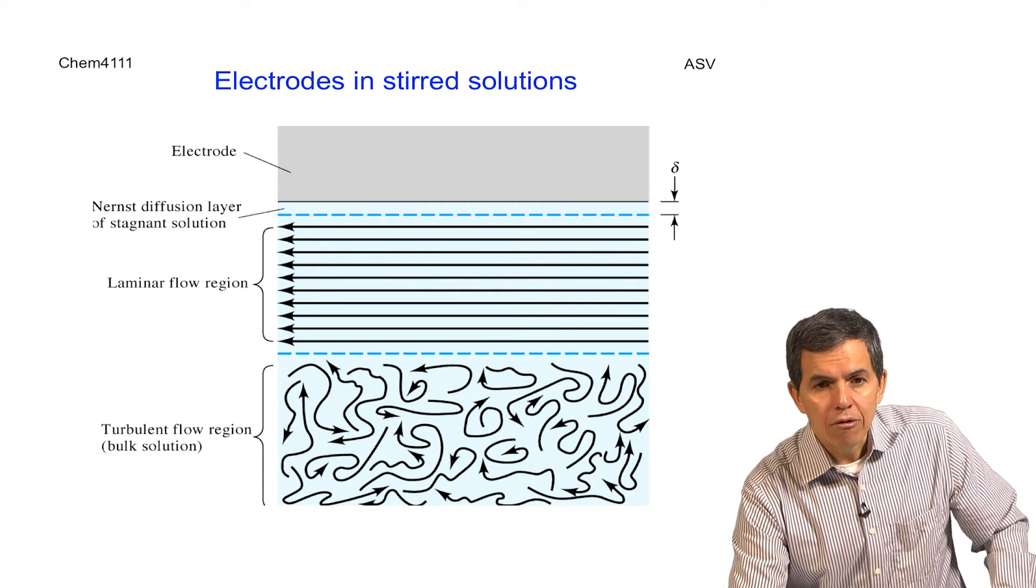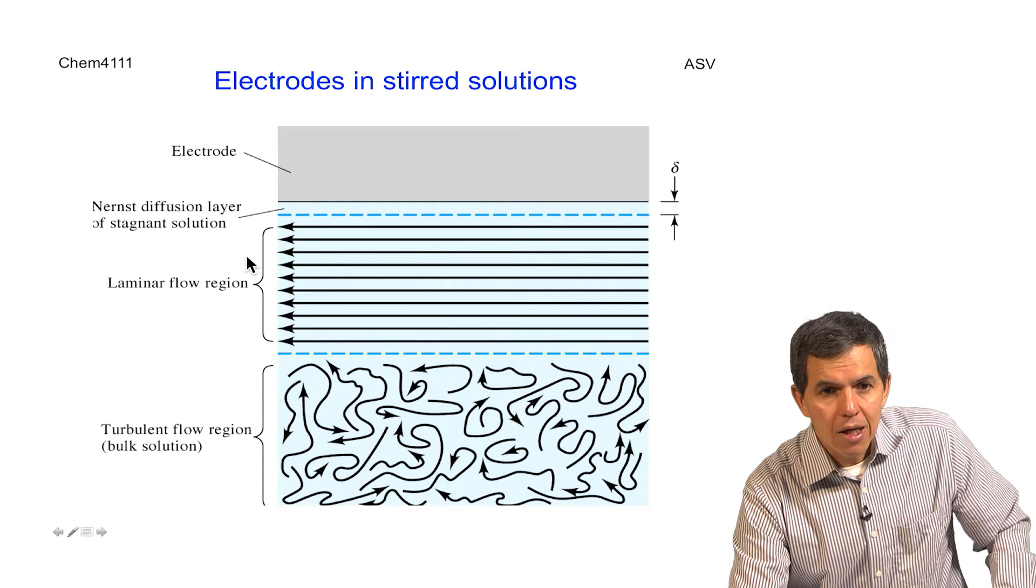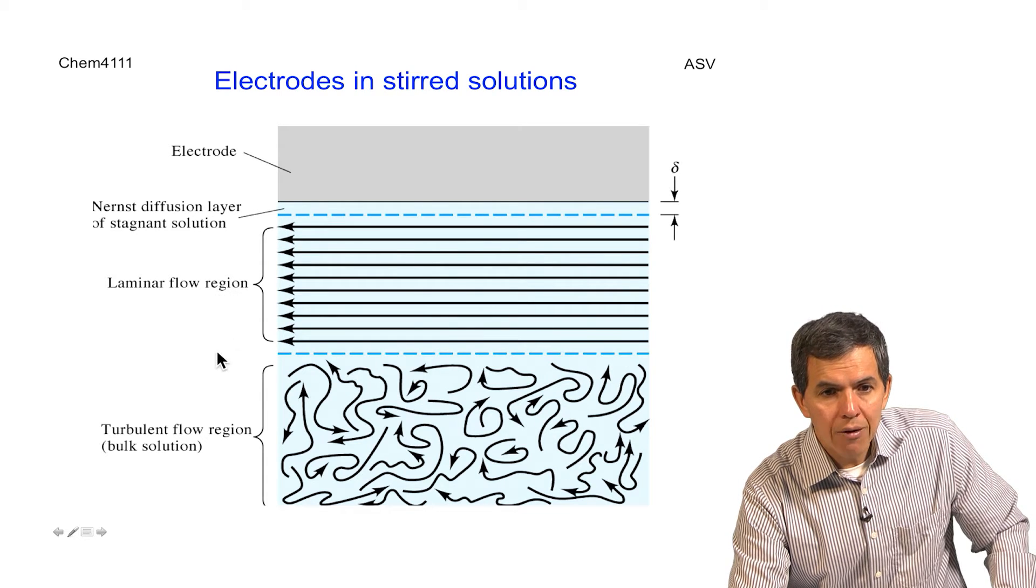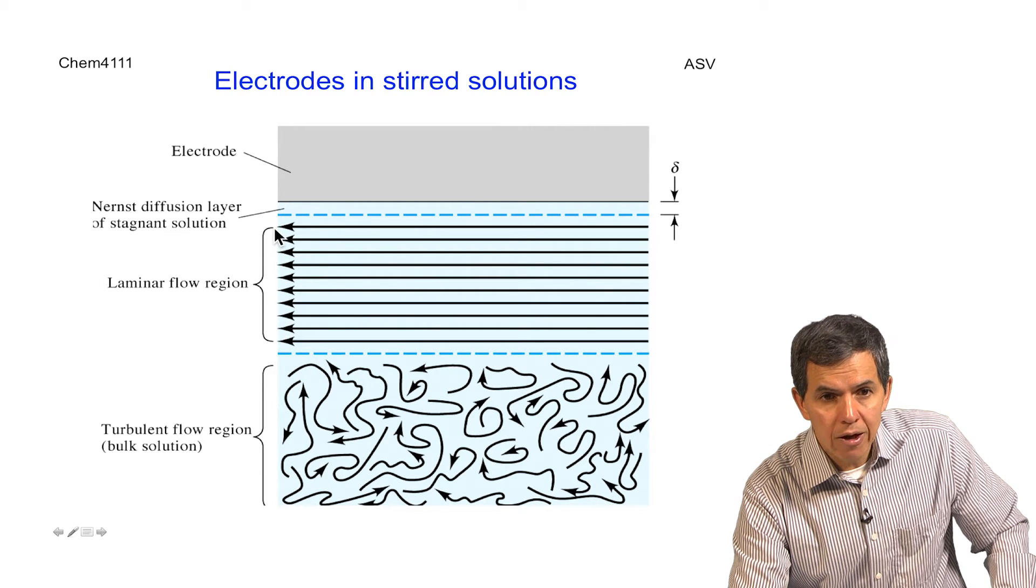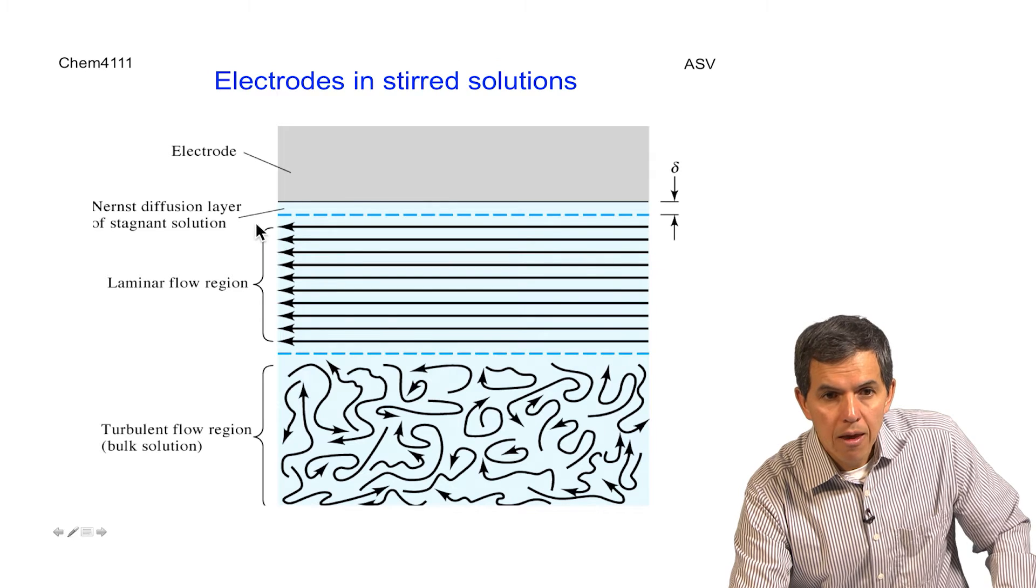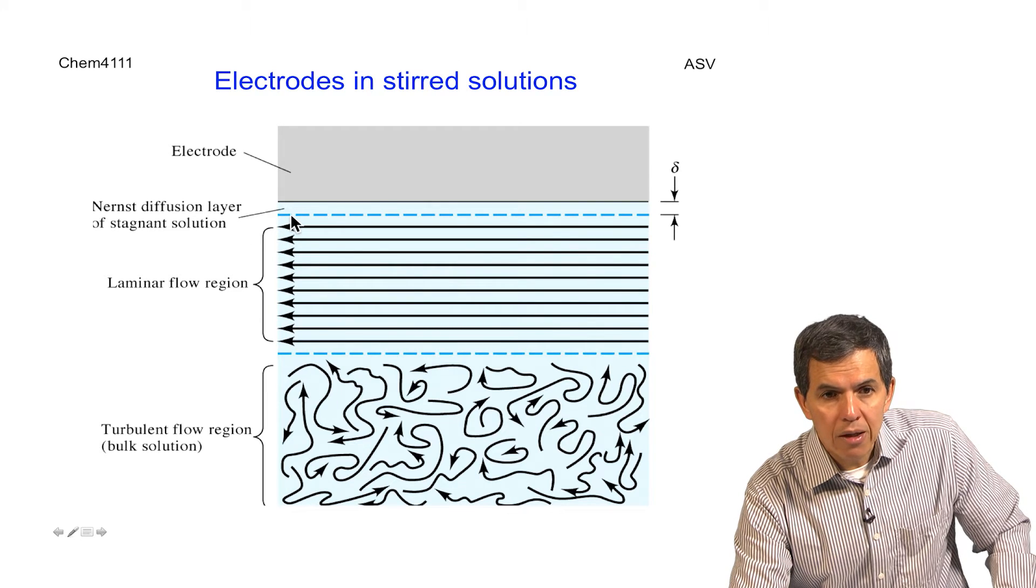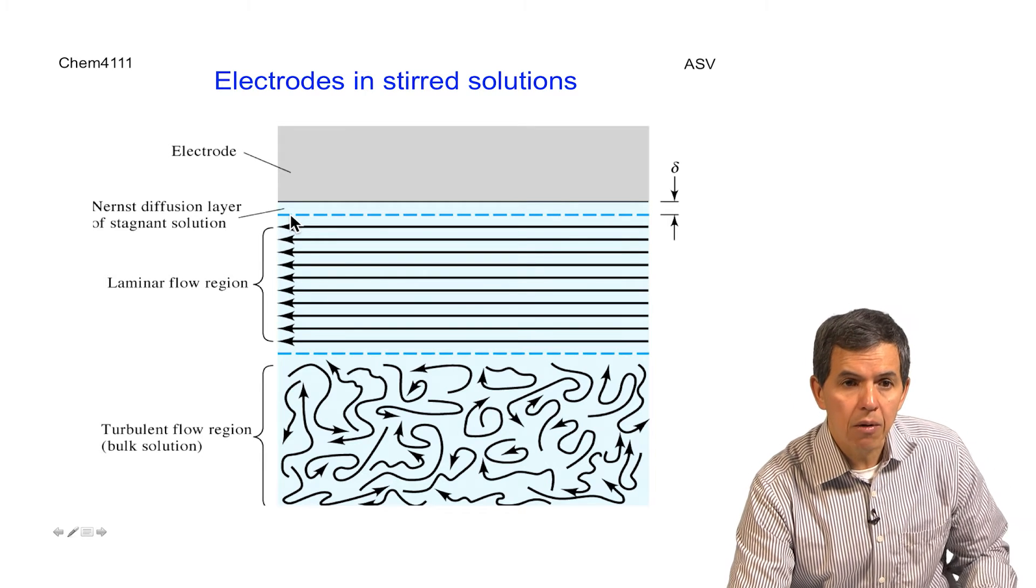This technique, ASV, requires the stirring of solution so that we have a turbulent region, we have an area where there is laminar flow, and very close to the surface of the electrode, we're going to have this stagnant solution or stagnant layer called the Nernst diffusion layer. This is where a lot of the electrochemical conditions that are important for quantitative analysis take place.